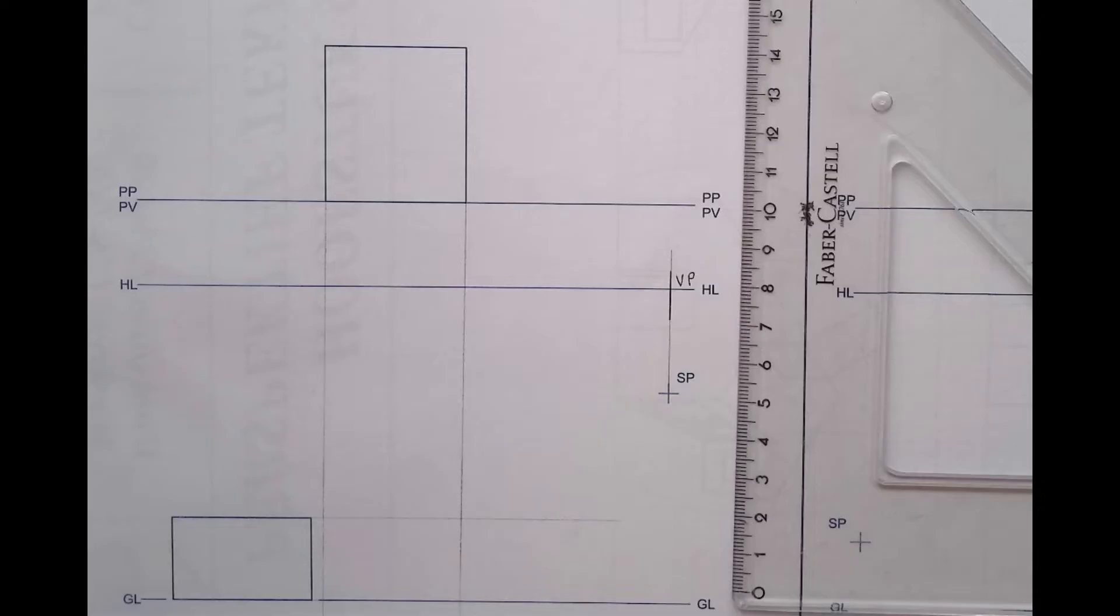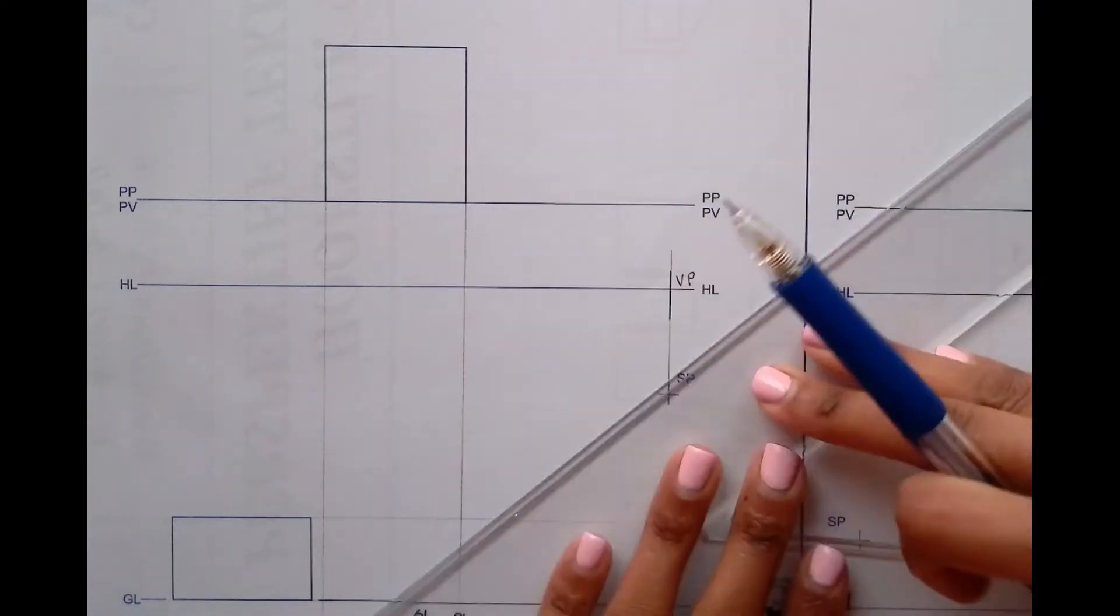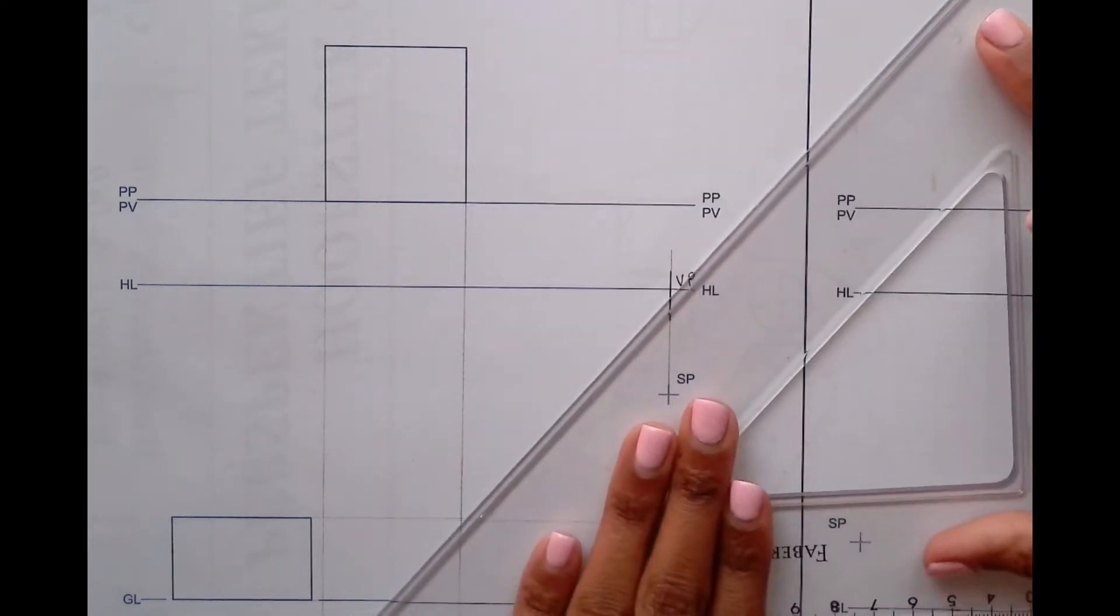With that being done, I can now start drawing my perspective drawing of this object. For all the lines that I projected across, I will have this corner, this one, and this one. Since we are not told to show any hidden details, I'm just going to project only the three to the vanishing point.